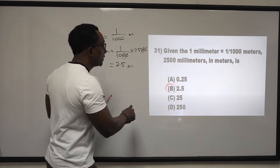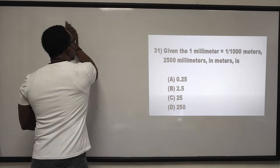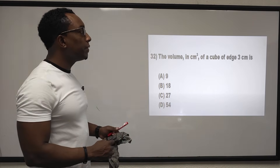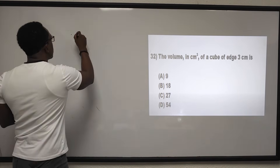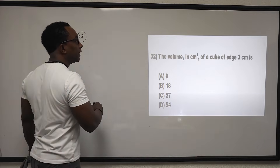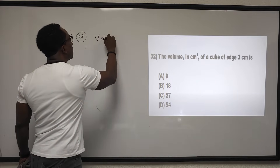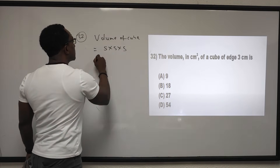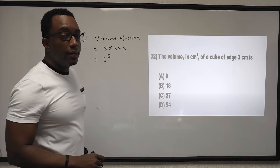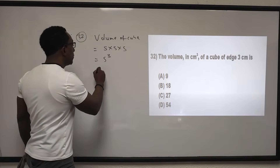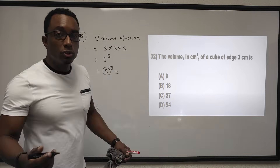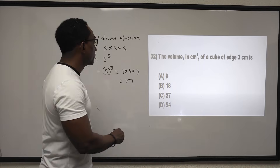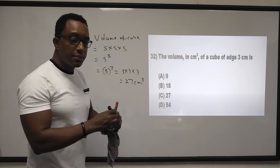Question 32: the volume in cm cubed of a cube with edge 3 centimeters. Volume of a cube equals side cubed: 3 cubed equals 3 by 3 by 3 equals 27 cm cubed. The answer is C.